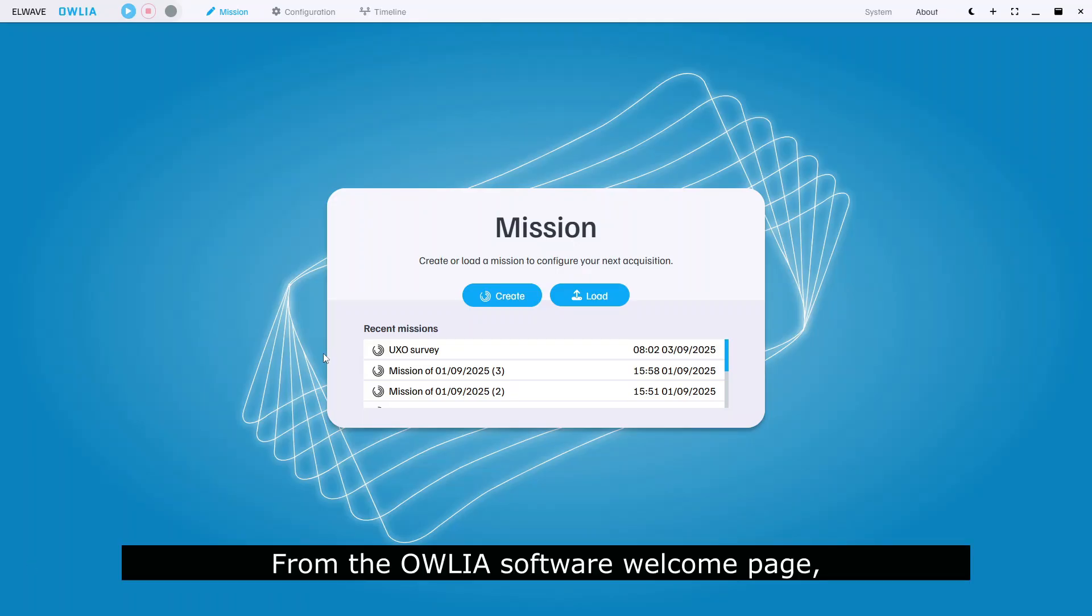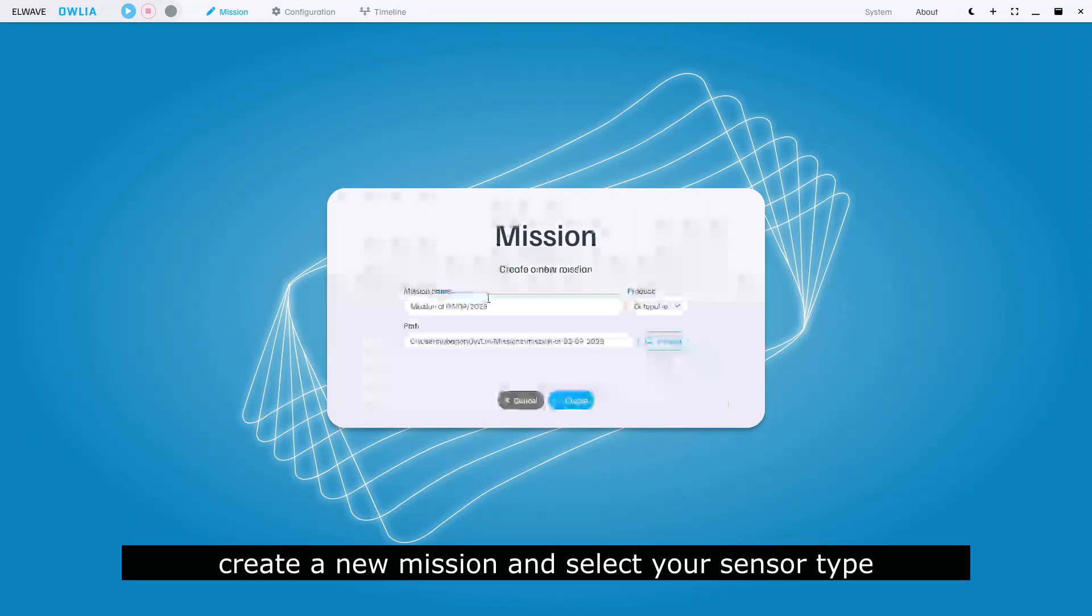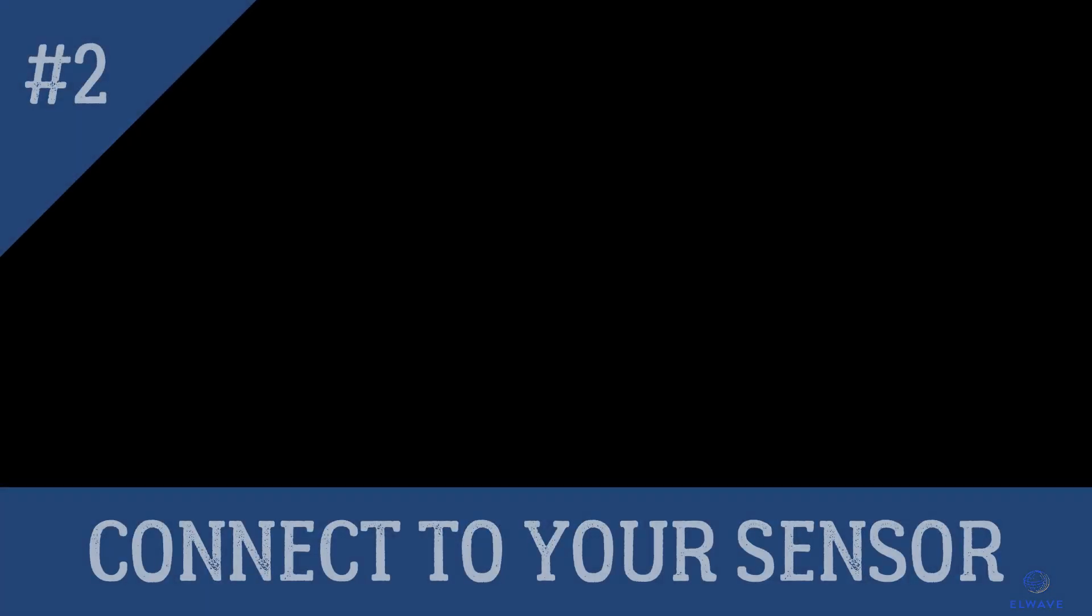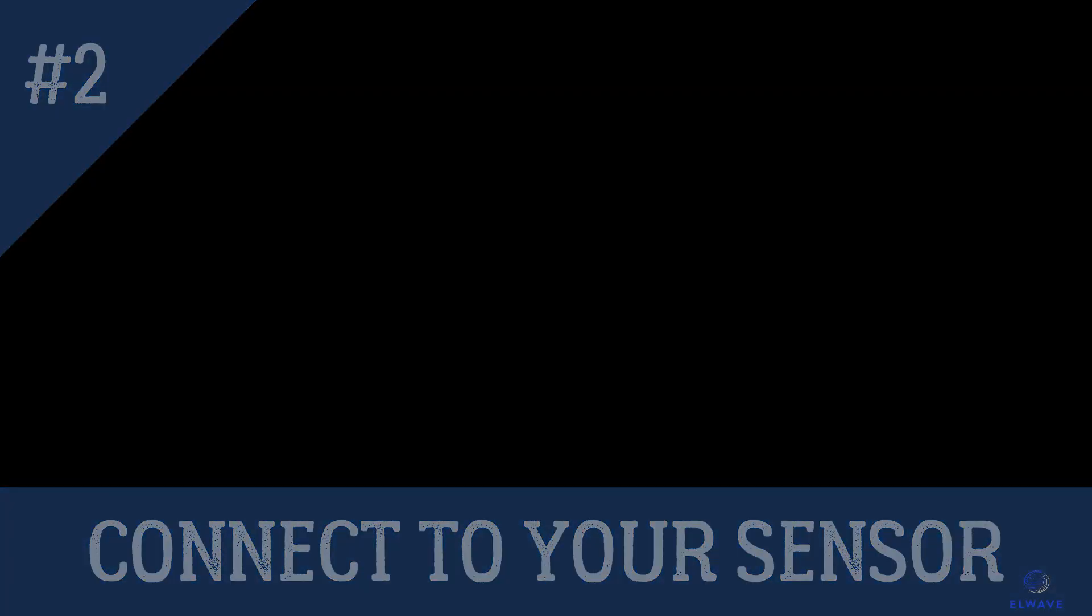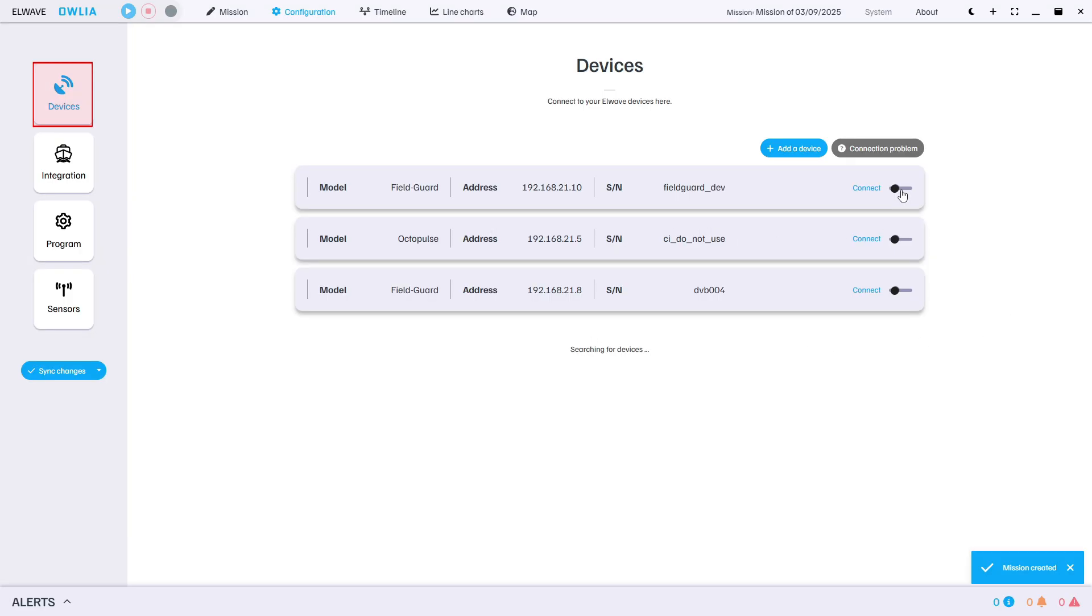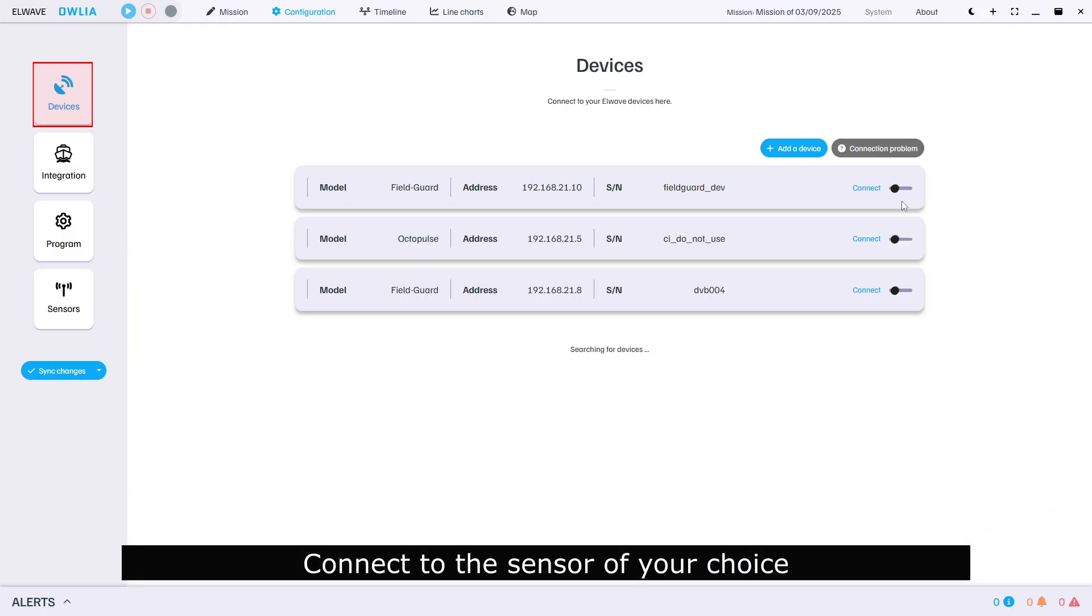From the Alia software welcome page, create a new mission and select your sensor type. The devices tab lists all the L-wave sensors in the network. Connect to the sensor of your choice.